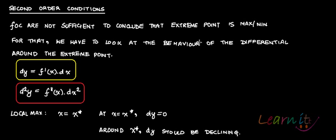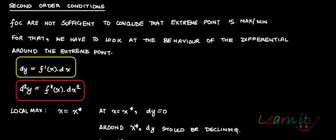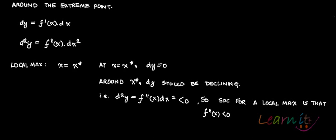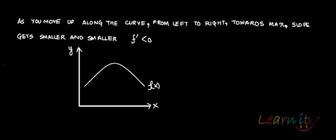In order to check for the local max — that is, whether this function attains the maximum in a particular region — you need to show that d²y is less than 0. The second-order condition for a local max is that f''(x) < 0, meaning the slope of the first derivative should be falling.